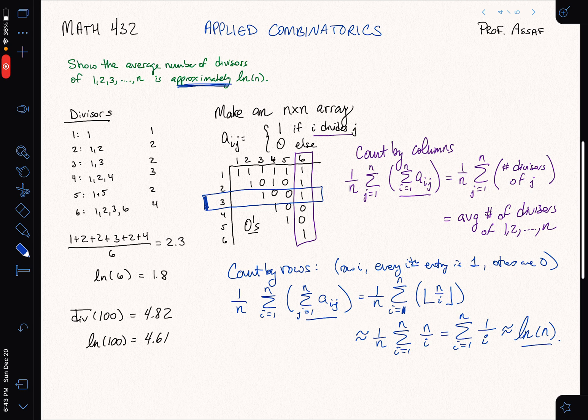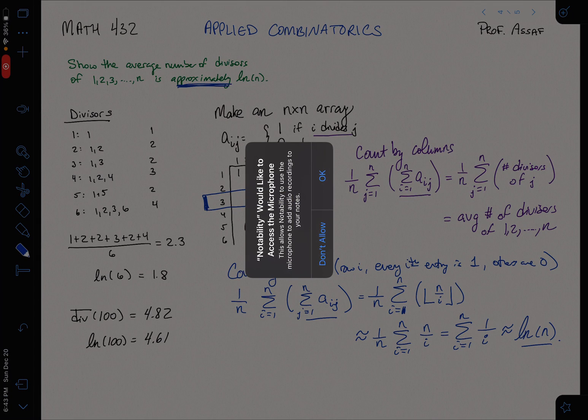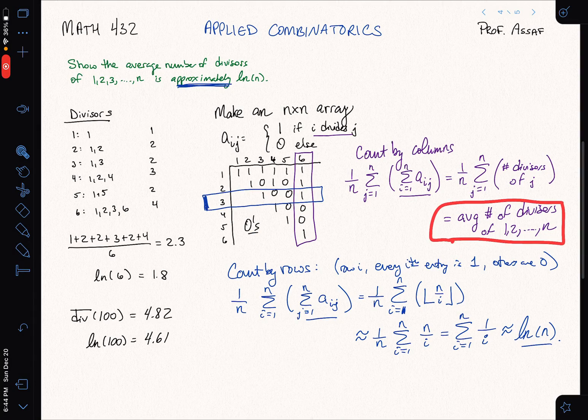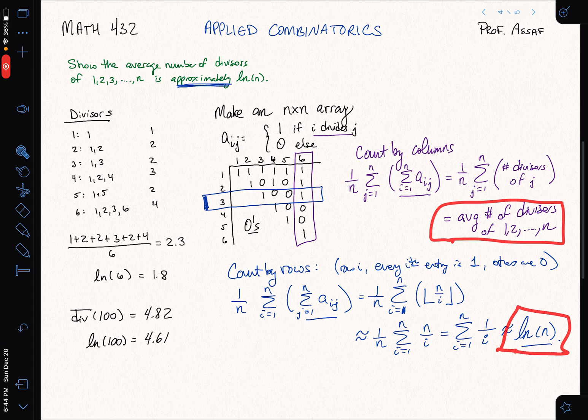So, in fact, we do have... we have that the average number of divisors is approximately equal to log of n. Just by counting this matrix, the entries in this matrix, in two ways. So, let's do this.